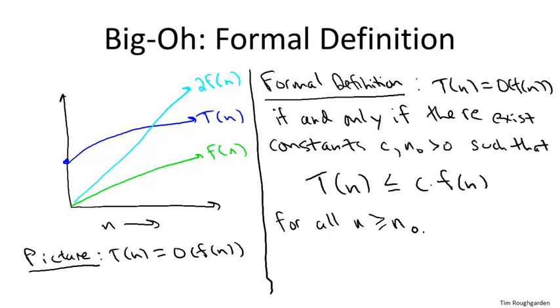So the role of these two constants is to quantify what we mean by a constant multiple and what we mean by sufficiently large in the English definition. C obviously quantifies the constant multiple of F of n, and n naught is quantifying sufficiently large. That's the threshold beyond which we insist that C times F of n is an upper bound on T of n.